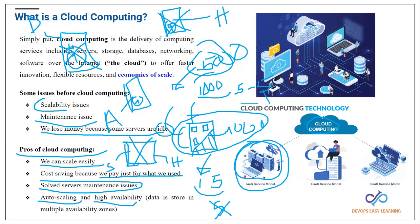A single point of failure means if something crashes, everything shuts down. The cloud resolves this with high availability. The reason we're discussing this in a Linux course is that when you go through Linux, you need to launch a virtual machine in the cloud. Everything placed in the cloud is called virtual — because you can't touch the physical server, you access it through a website while the physical server is stored somewhere in the data center.